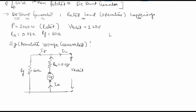The equation for EG can be derived by applying KVL to the circuit. Starting from the armature branch, EG equals V (the terminal voltage) plus IA times RA. The next step is to find IA so that EG can be calculated.